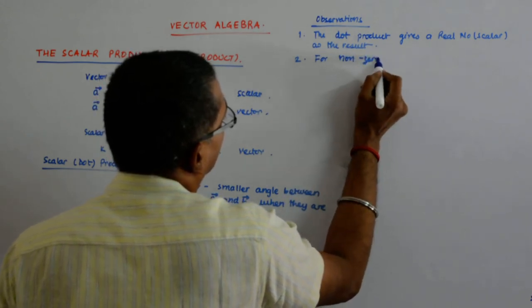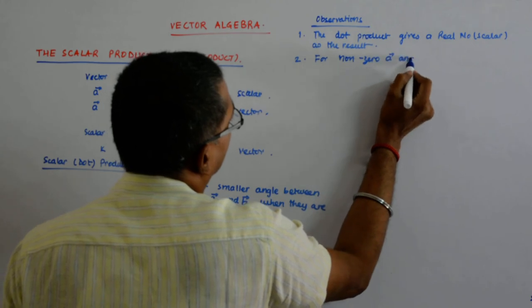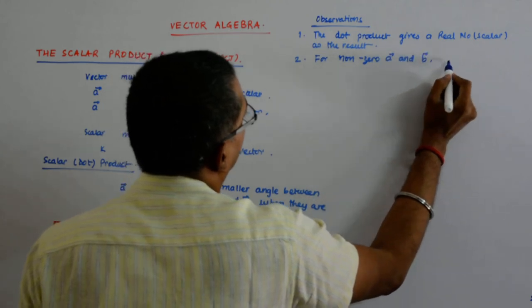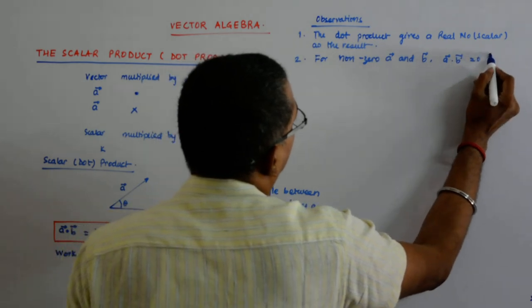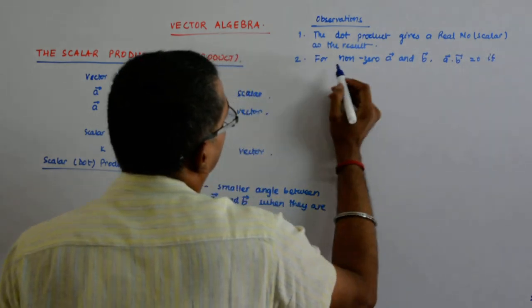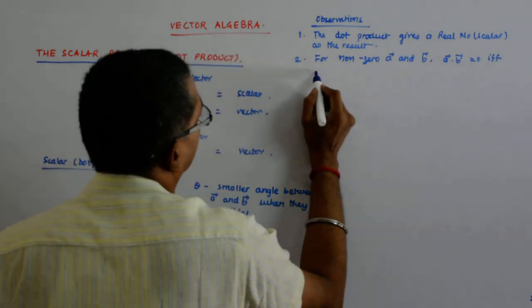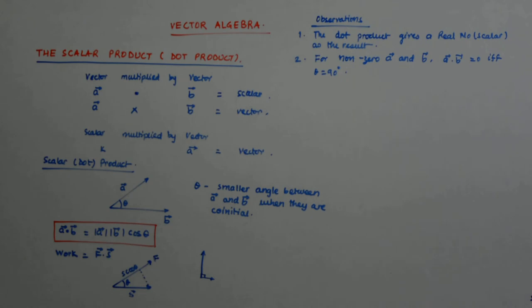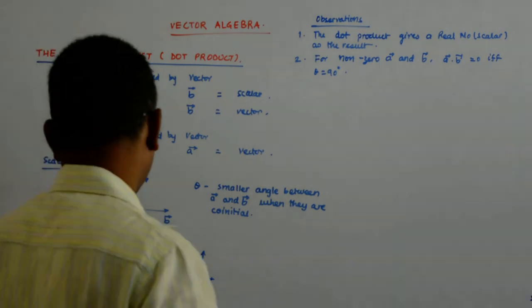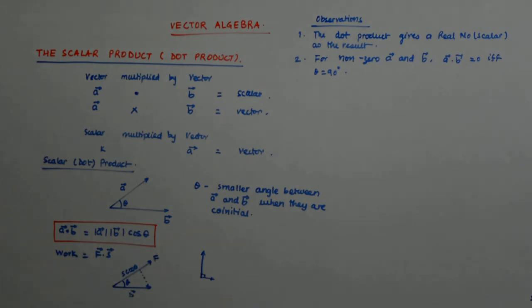a dot b is equal to 0 if and only if theta is equal to 90 degree. So, they can both be non-zero. Still, the dot together to give you a 0.